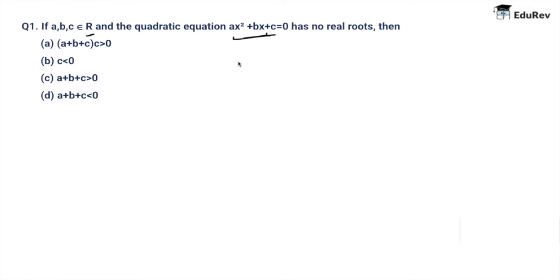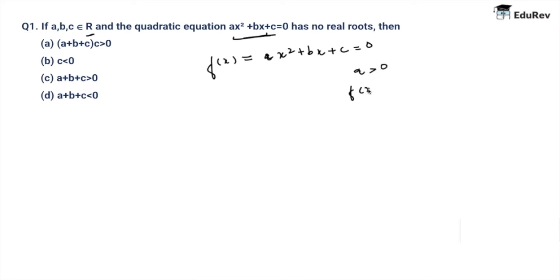Let's solve it now. I know that f(x) = ax² + bx + c. For a > 0, I know that f(x) has to be greater than zero for all x. Hence for f(1), I would say that a + b + c > 0, and for f(0), I would say that c > 0.